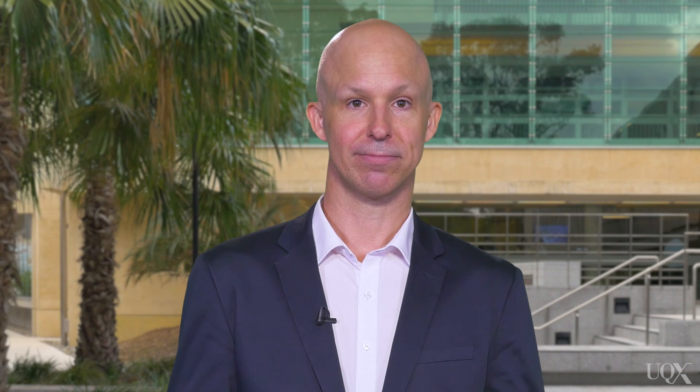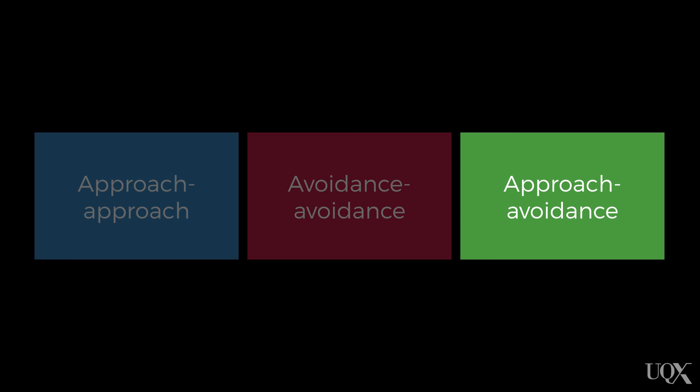There's a third possibility: the approach-avoidance type. This is not about a choice between two different behaviours, but about whether or not to pursue a goal that has both a positive and a negative aspect to it. Imagine you're at a really cool party, you meet somebody for the first time, and your id instantly says this person is super hot. Your id is really excited and is telling you that you should date this person.